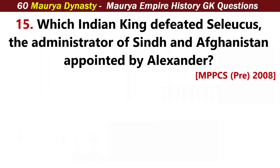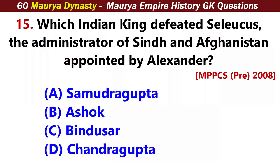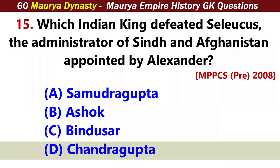Which Indian king defeated Seleucus, the administrator of Sindh and Afghanistan appointed by Alexander? Answer D: Chandragupta.